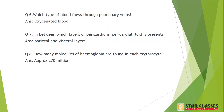Question 6: Which type of blood flows through pulmonary veins? Although they are veins, we have studied an exception: all veins carry deoxygenated blood except pulmonary veins. Similarly, all arteries carry oxygenated blood except the pulmonary artery. So the answer here is oxygenated blood.